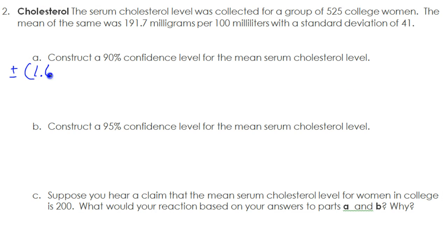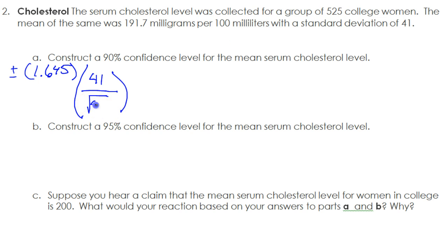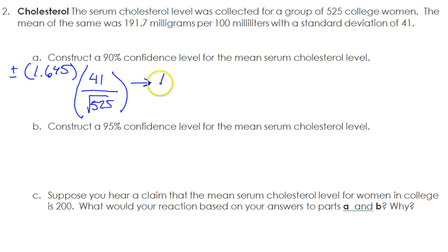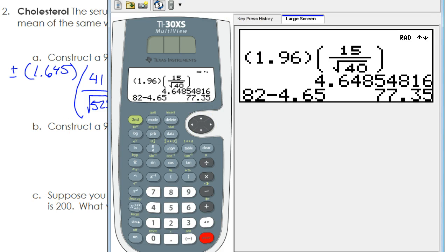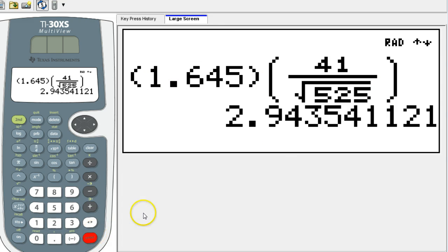So 1.645. Now we're going to do the standard deviation, which is 41, over the square root of the sample size, which was 525. That is going to give us the margin of error. If we just put that in the calculator, we get 2.94.